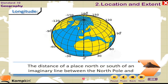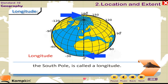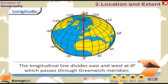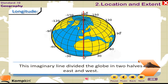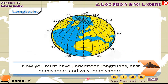Longitude is the distance of a place north or south of an imaginary line between the North Pole and South Pole. The longitudinal line divides the globe into east and west at zero degrees, which passes through the Greenwich Meridian. This imaginary line divides the globe into two halves — east and west hemisphere.